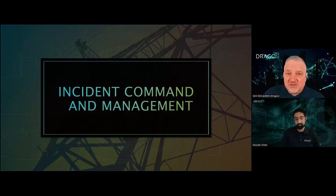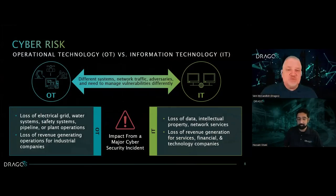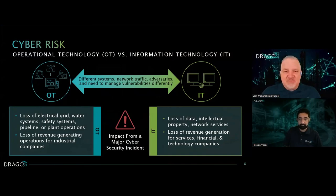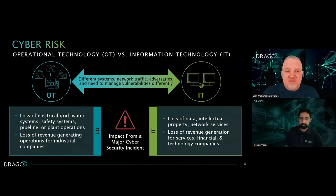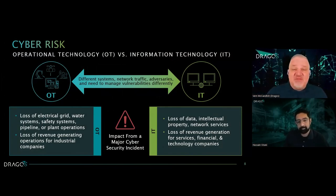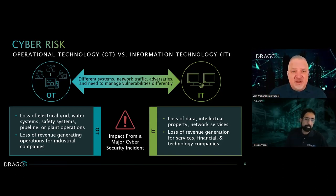From those five critical controls, the first is having the capability to do incident response in your OT environment. We're going to talk about a framework for incident command and management, because when an incident happens we want to make sure you have the ability to respond. We all want to prevent all incidents, but we're never going to achieve 100% prevention because adversaries are creative — they will adapt and overcome the defenses we build.